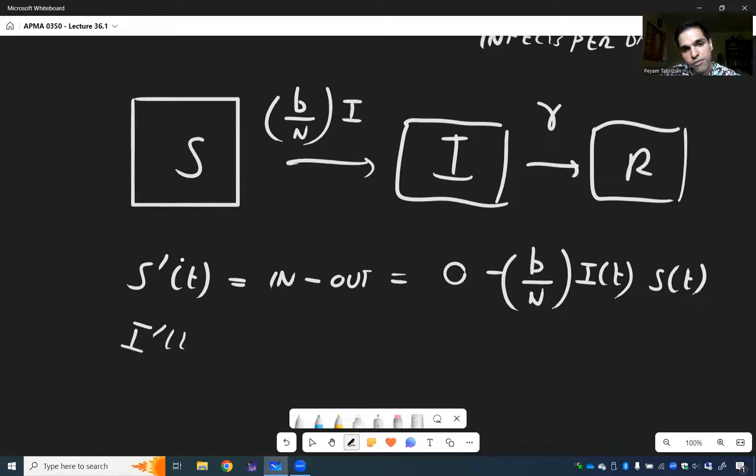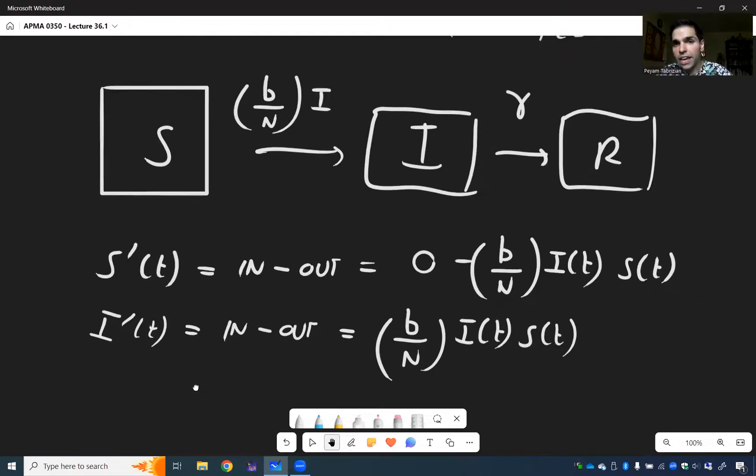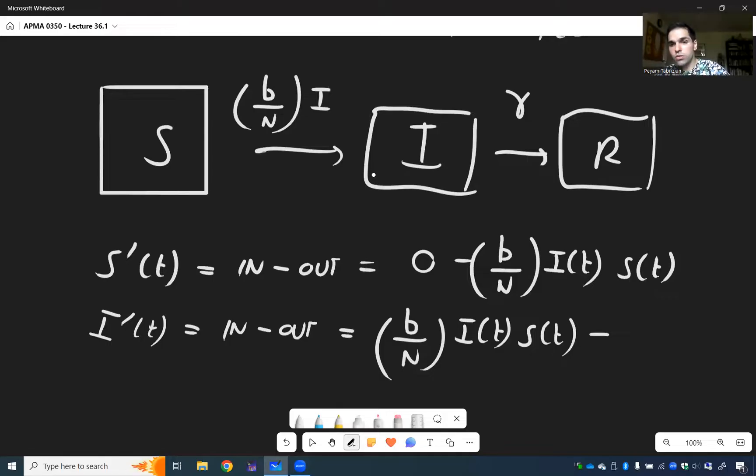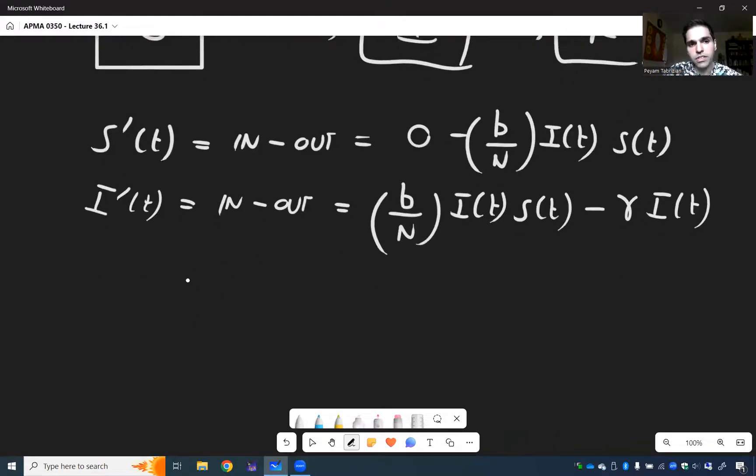That's one thing. And then for I prime of t, it's still in minus out. So what is going in is once again the rate B over N I of t times whatever is in the first tank. So remember that chemical tank problem with concentration. And what is going out is just constant. So the rate is gamma and whatever is in the second. And last but not least, R prime of t. Again, in minus out. What is going in is gamma times I of t. And what is going out is zero.